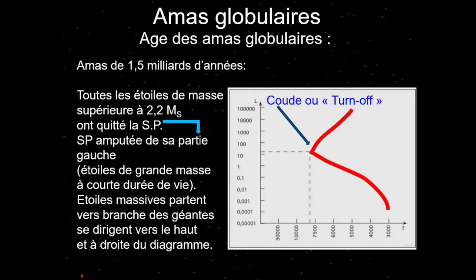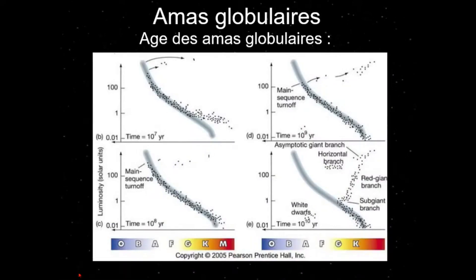C'est remarquable : en étudiant le coude (turn-off) du diagramme HR des étoiles d'un amas, on peut trouver son âge. À 1 million d'années, le coude est très haut. À 10 millions, à 100 millions, à 1 milliard — le coude descend progressivement vers la droite. À 10 milliards d'années, le coude est très du côté des rouges. La position du coude nous permet de déterminer l'âge de l'amas.